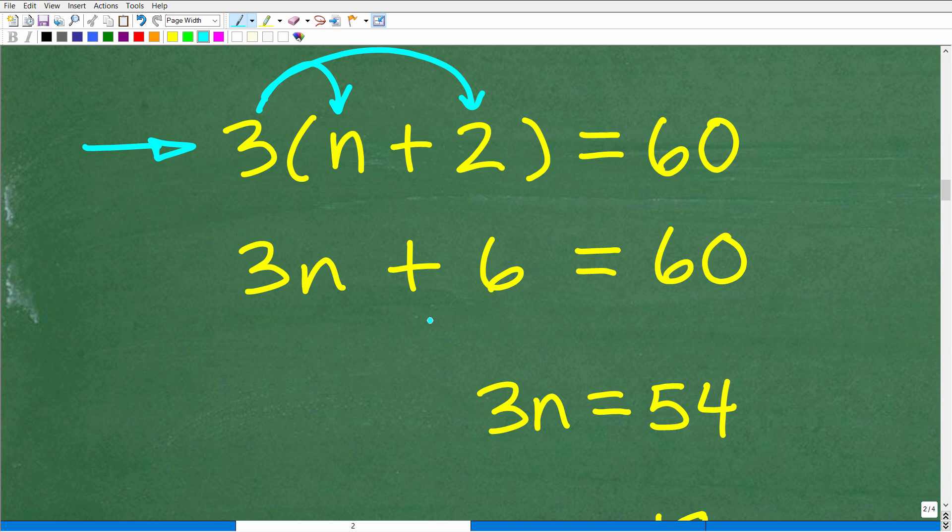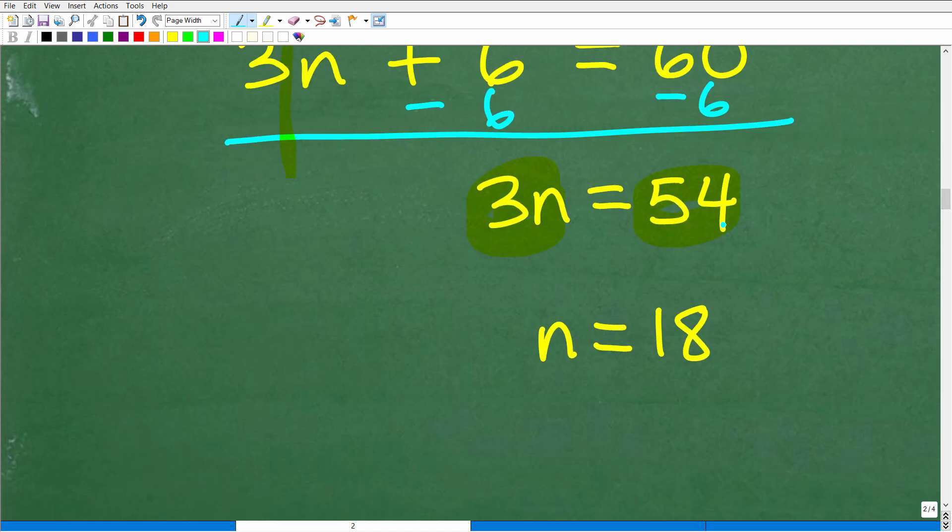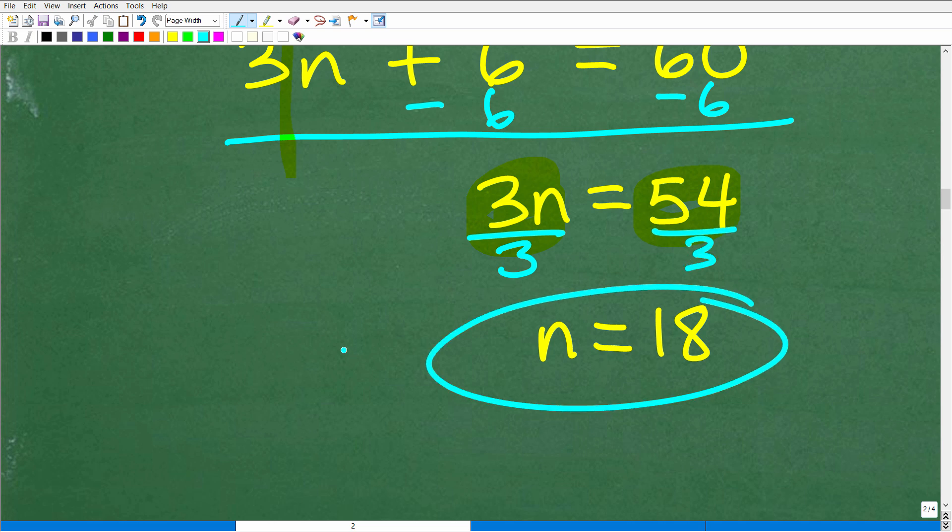All right. So, now, what we need to do is subtract 6 from both sides of the equation. We're going to isolate this 3n here. So, when we subtract 6 from both sides of the equation, we're going to get 3n. 6 minus 6 is 0, we don't need to write that there. And 60 minus 6 is 54. So, the last step is to divide both sides of the equation by 3. And when we do that, we've got 54 divided by 3. And that is 18. So, our mystery number is 18.